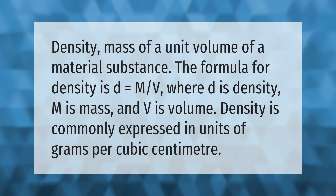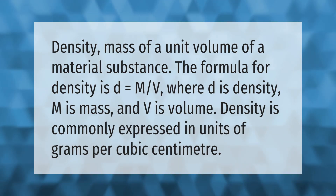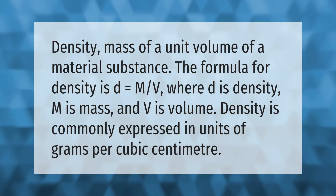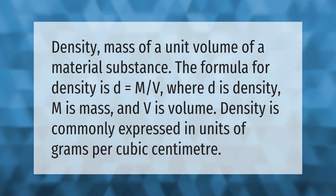Density is the mass of a unit volume of a material substance. The formula for density is D equals M divided by V, where D is density, M is mass, and V is volume. Density is commonly expressed in units of grams per cubic centimeter.